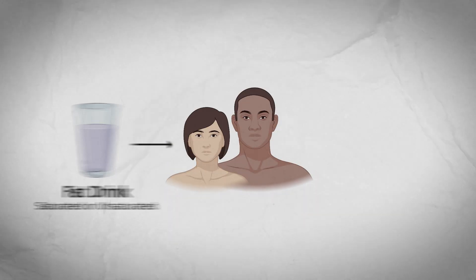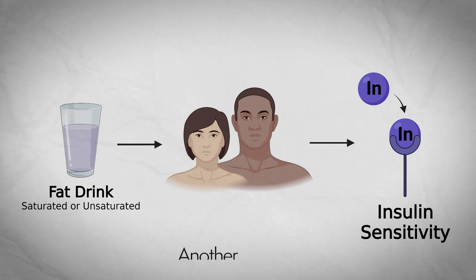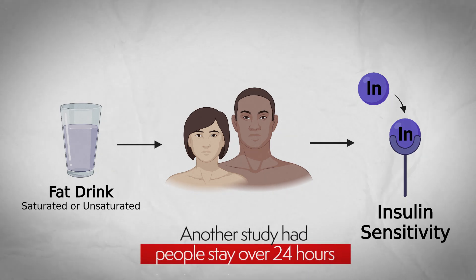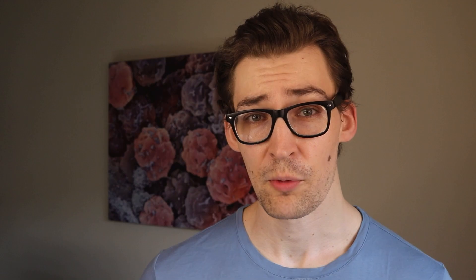The short-term studies were performed somewhat similarly. They recruited people to come into a lab and either fed them a high saturated fat drink, a high unsaturated fat drink, or water, and then measured their insulin sensitivity over time. One study fed participants the drink once and measured over several hours, but another had people stay over 24 hours, consuming each drink every hour or two. Detailed analyses of all studies are freely available, but here's a general overview.